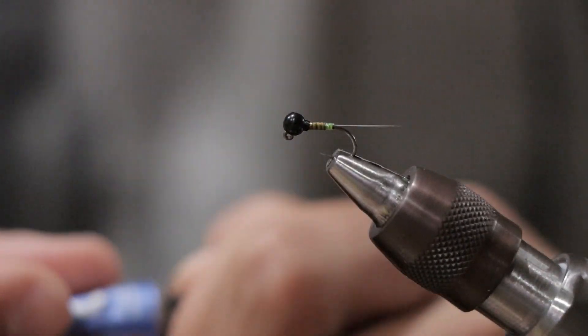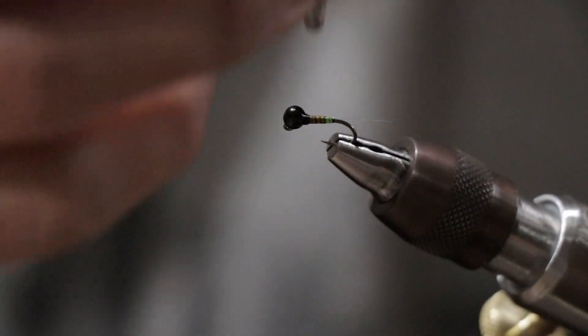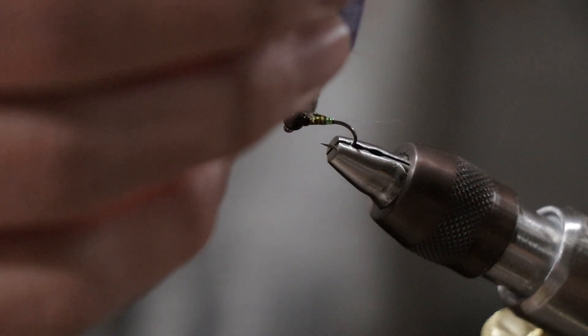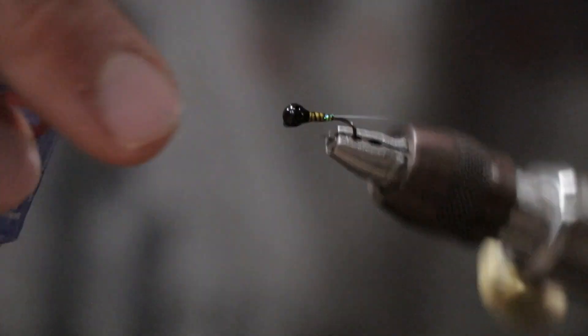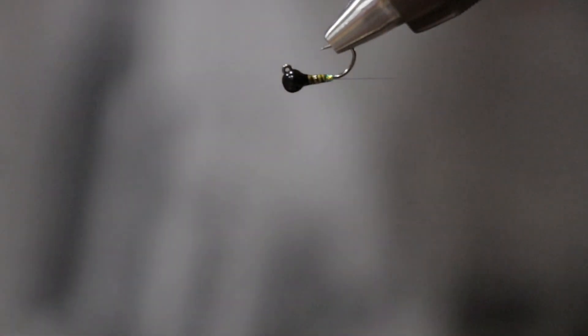All right, now we can hit it with the good stuff, that good old solar res or any UV resin of your choice. You get too much you can just kind of dot it off just like that, turn it upside down.